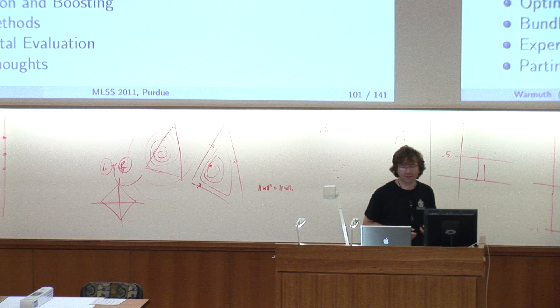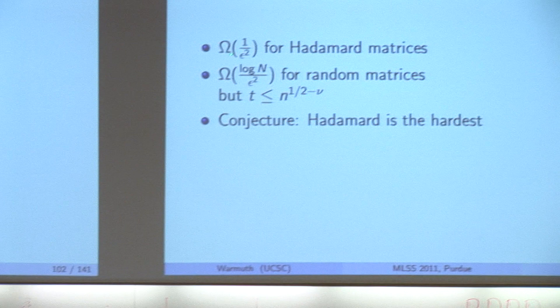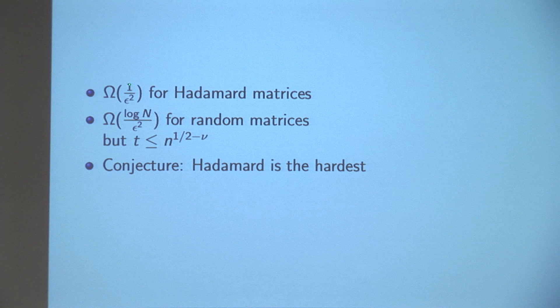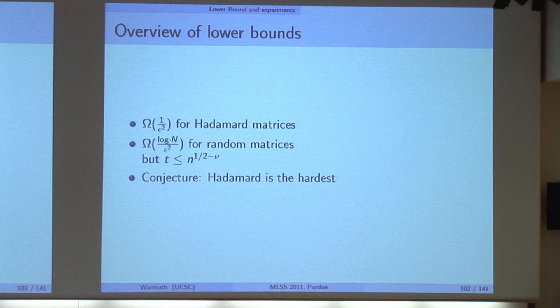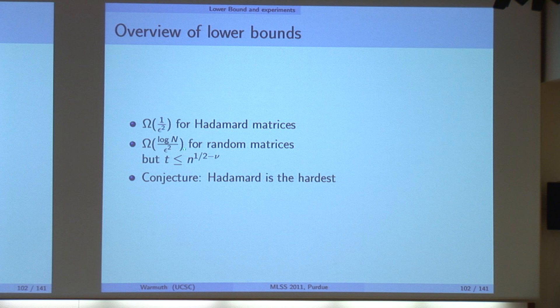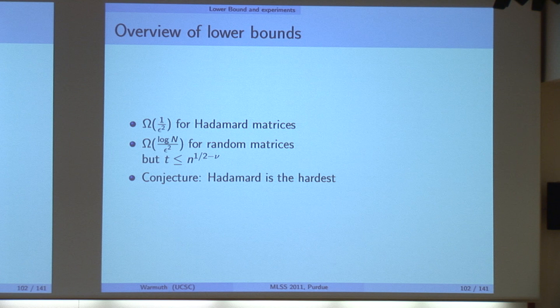So I'm going to talk about lower bounds, and I sketched this in the end of last lecture. I'm going to show you an omega one over epsilon squared lower bound for Hadamard matrices. And I did this together with Vichy, a number of people recently, Ni helped.